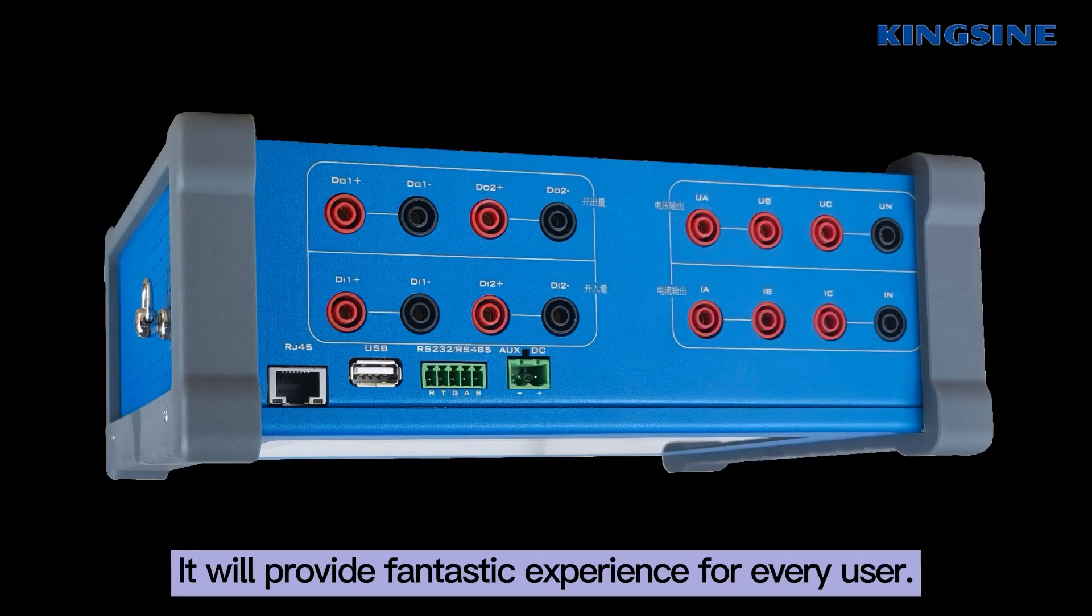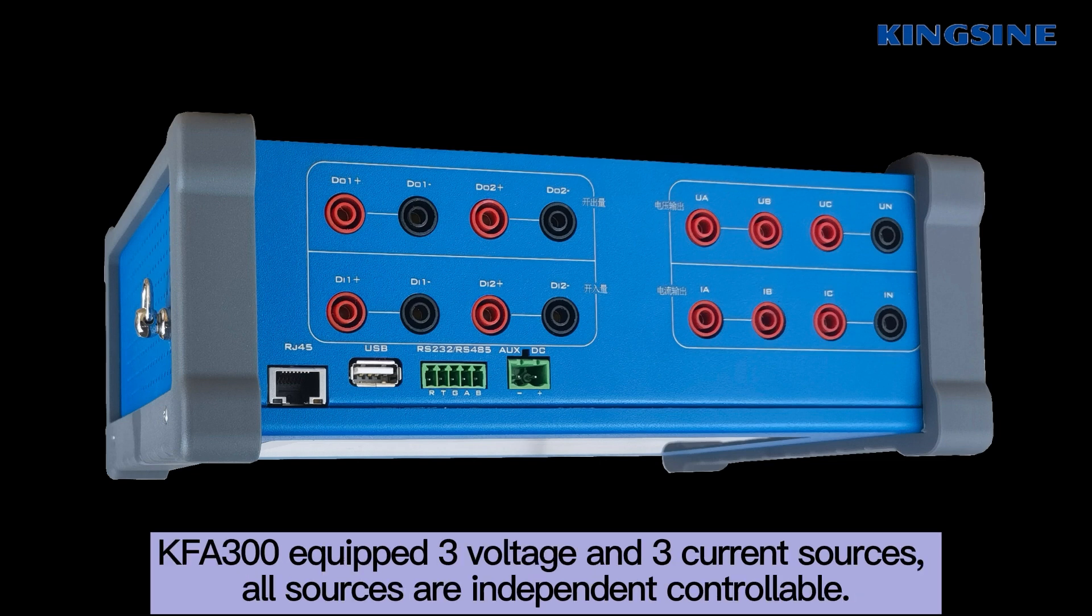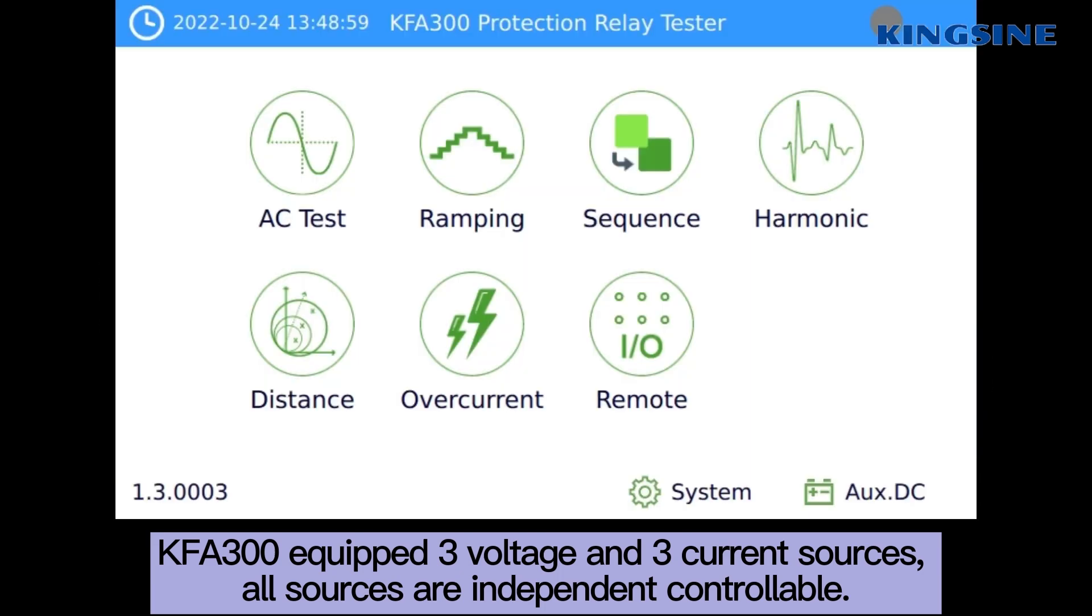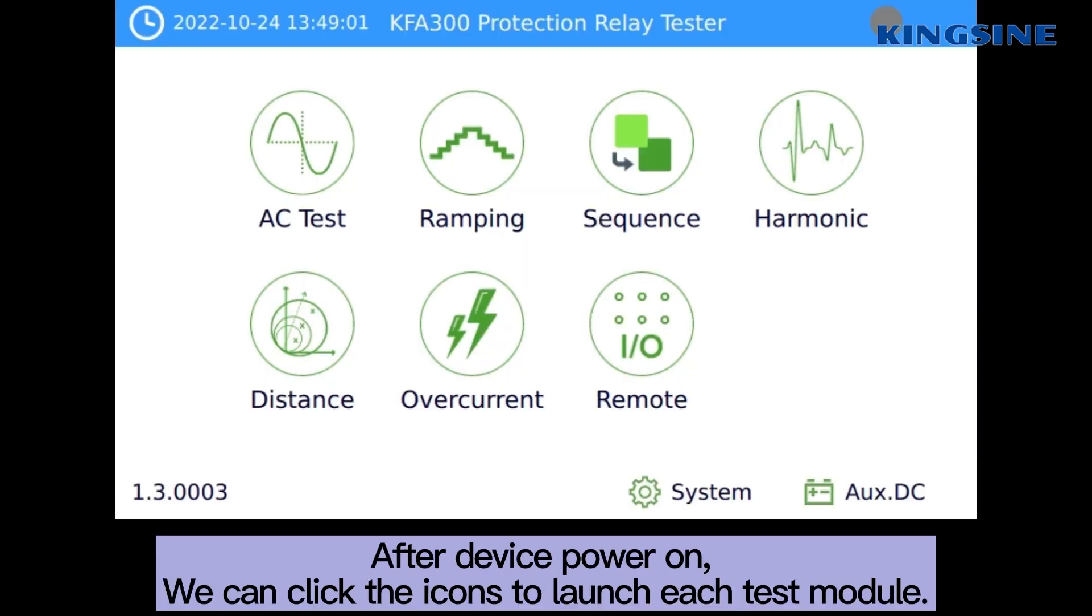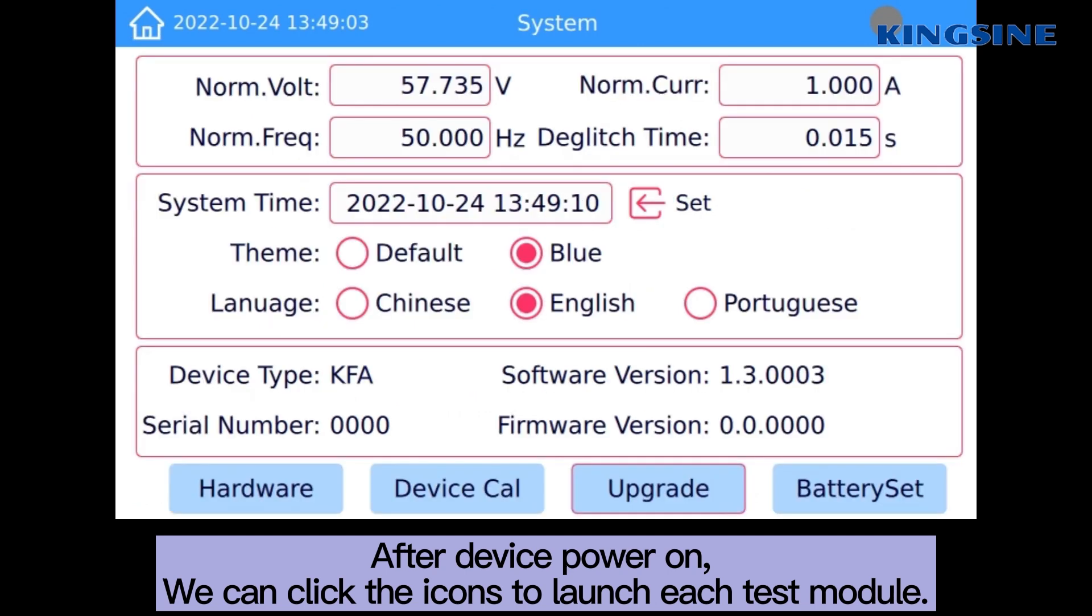It will provide fantastic experience for every user. KF300 equipped 3 voltage and 3 current sources. All sources are independent controllable. After device power on, we can click the icons to launch each test module.